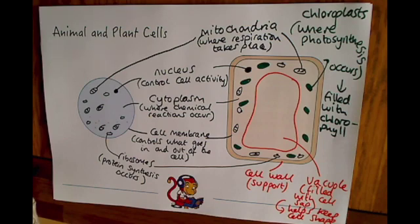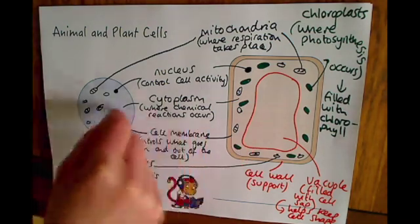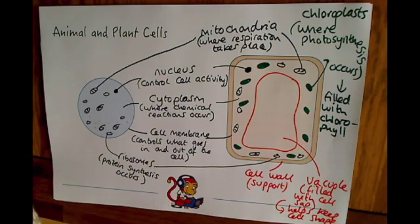So these are the basic components of animal and plant cells. Unfortunately, it's a case of trying to commit these to memory, perhaps putting a poster on your wall to try and remember all the names and what they do, remembering which parts are both in animal and plant cells and which ones are only for plant cells.